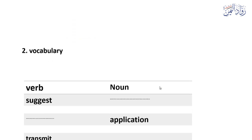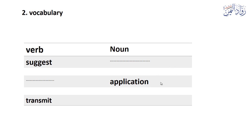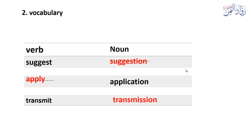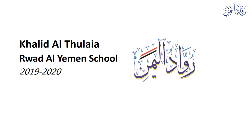A frightening dream — is it 'brilliant', 'scenery', or 'nightmare'? It's a 'nightmare'. Ibn Al-Nafis was a physician — that means doctor. Choose the correct answer. The verb 'suggest' — what is the noun? 'Suggestion.' Sometimes the given word is a noun: 'application' — what is the verb? 'Apply.' 'Transmit' — the noun is 'transmission.' With this I come to the end of the fourth part of our revision. This is Khaled from Rwad Al-Yaman International Schools. See you.